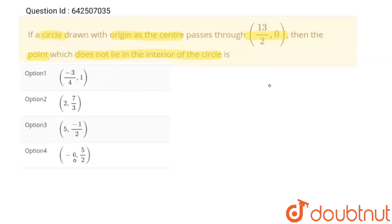This is our y-axis, this is our x-axis, and this is the origin. For this circle, origin is the center. Suppose this is our circle, and we can see that this circle passes through point (13/2, 0), or we can write (6.5, 0). And 6.5, 0 is the point lying on the x-axis.